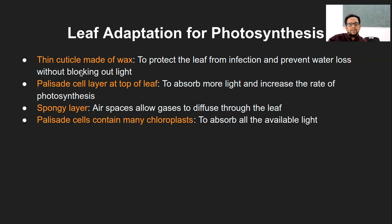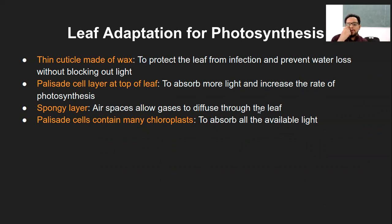Thin cuticle made of wax protects the leaf from infection and prevents water loss without blocking sunlight. If the cuticle were optically non-transparent, it would absorb all the light and it would not reach the mesophyll region. The cuticle is mostly thin, or even if thicker, it is optically transparent so light passes through easily. The palisade layer at the top of the leaf absorbs more light, increasing photosynthesis.